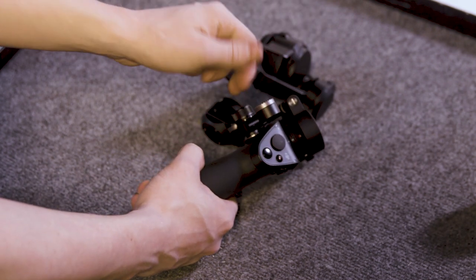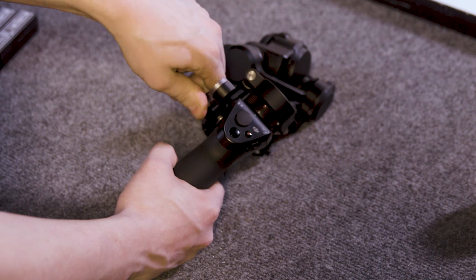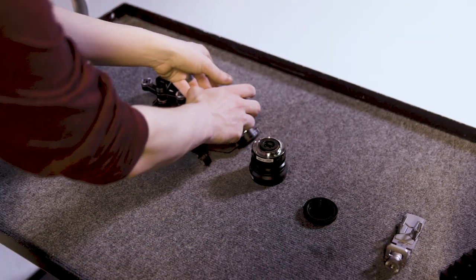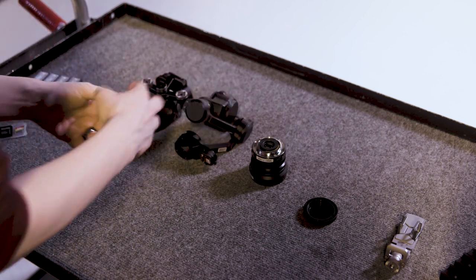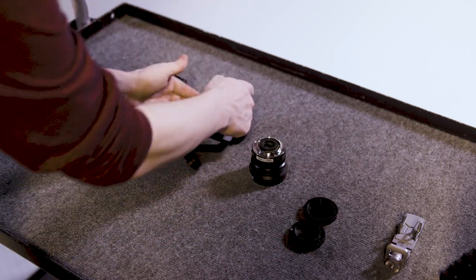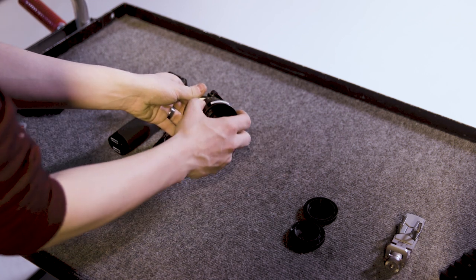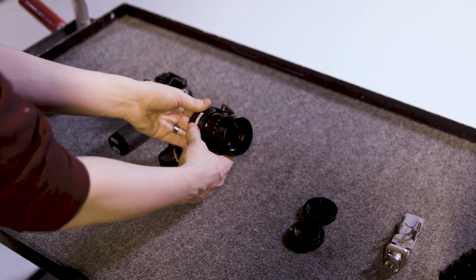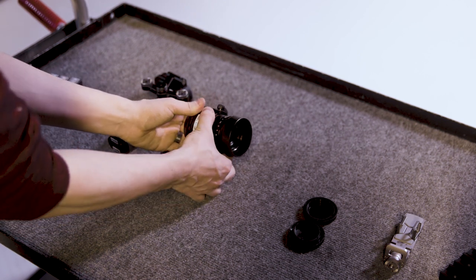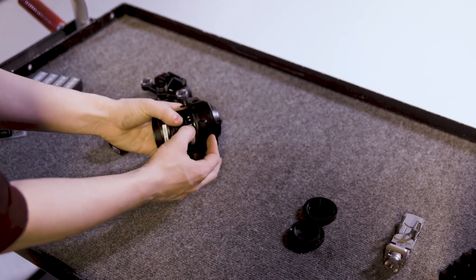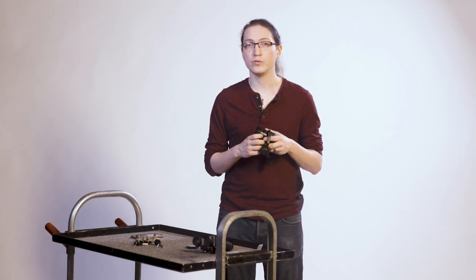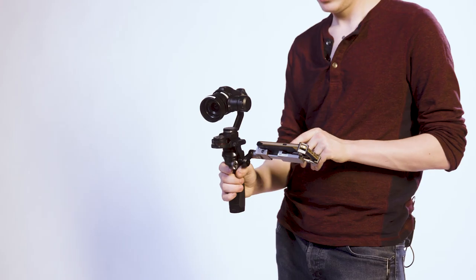We will then take the arm on the side and fold it down, then secure it with the screw. Next, we'll attach the lens to the X5 camera. Remove both caps and line up the red dot and rotate it until you hear it click into place. There's an additional lock ring located at the base of the lens. Rotate it counter-clockwise to tighten it down. You'll also want to make sure that the lens is set to autofocus and the aperture ring is set to A. This will allow us to control the aperture and focus electronically through the DJI GO app.